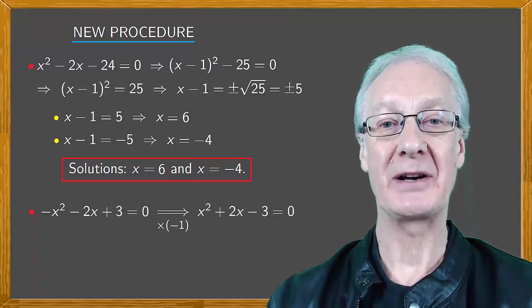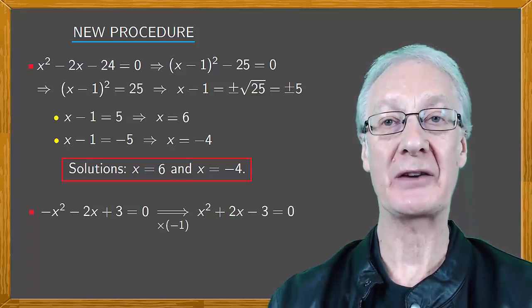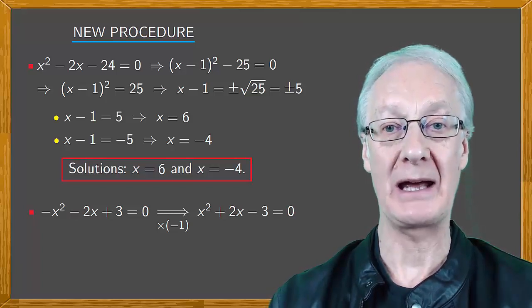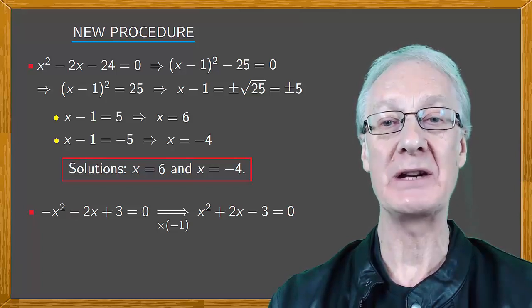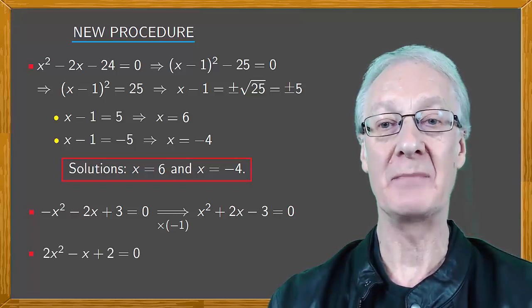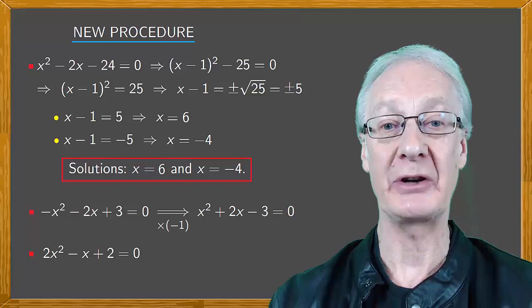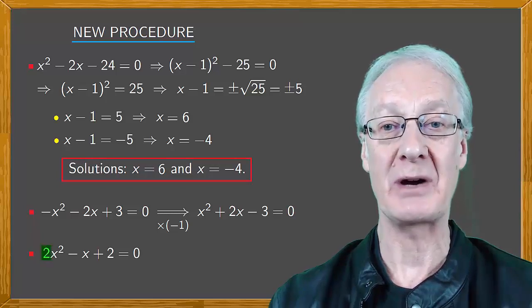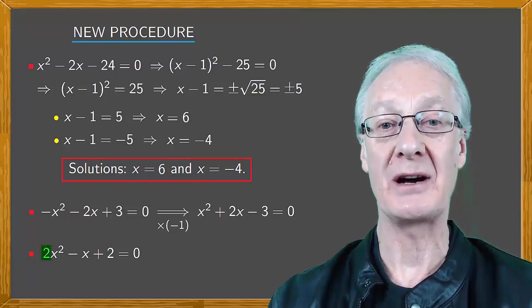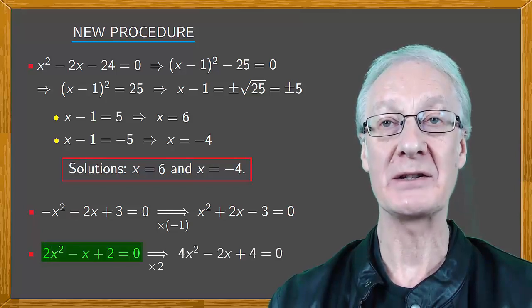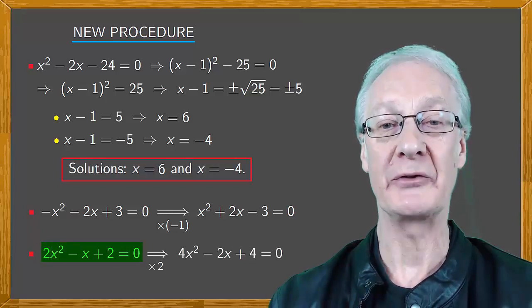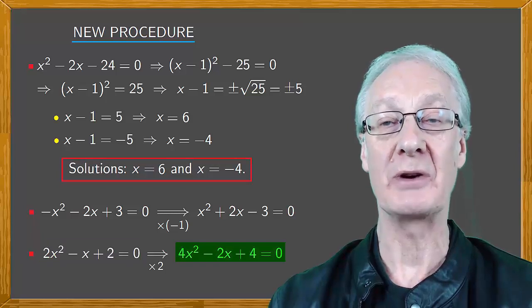Second, to simplify calculations, if the coefficient of x squared isn't a perfect square, multiply through by this coefficient. For example, in the equation 2x squared minus x plus 2 equals 0, 2 isn't a perfect square. So multiply the entire equation by 2 to give 4x squared minus 2x plus 4 equals 0. And now you can solve the equation more easily.